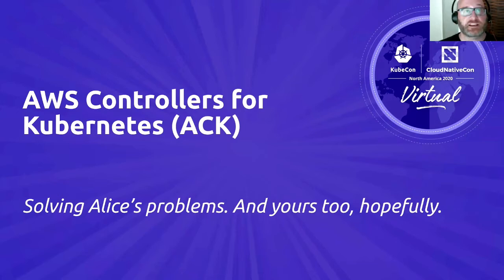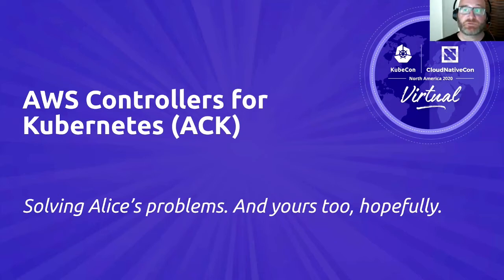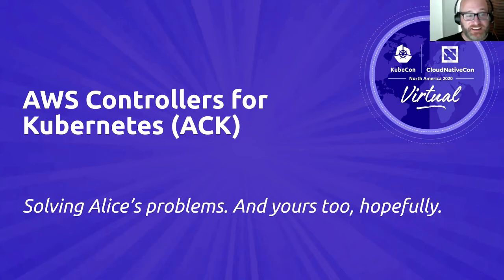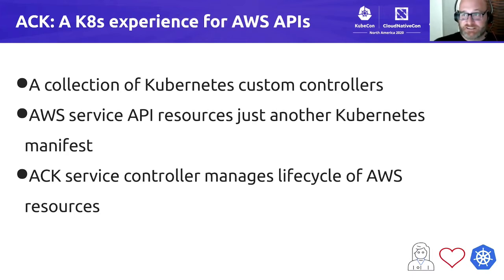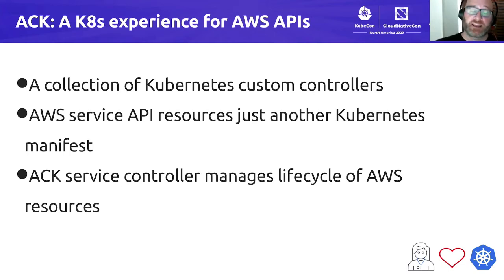ACK stands for AWS Controllers for Kubernetes — controllers plural. It is a collection of Kubernetes custom controllers, one for each AWS service API. The ACK service controller for a particular service, say S3, RDS, or SNS, manages the backend AWS resources for that service API on behalf of a Kubernetes user. The Kubernetes user submits their RDS instance or S3 bucket as a Kubernetes manifest, the API server receives that, writes it to etcd, and then the ACK service controller gets notified and manages the lifecycle of that resource by calling the AWS APIs itself.